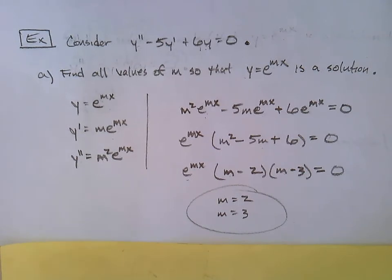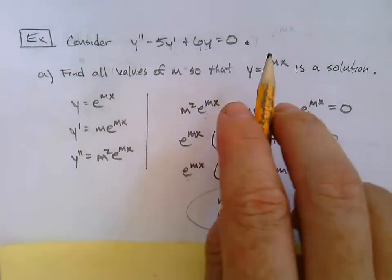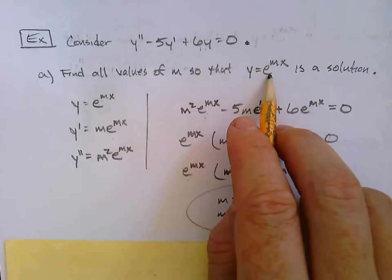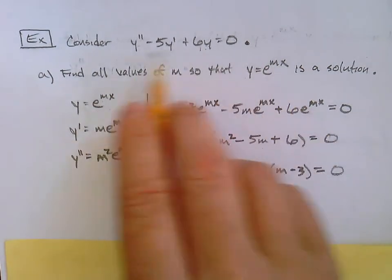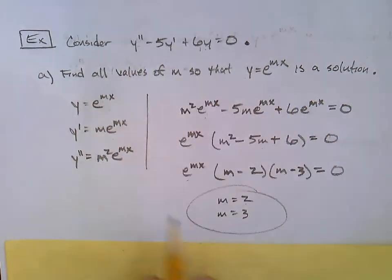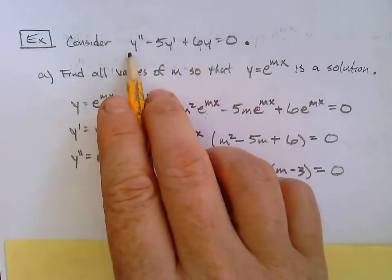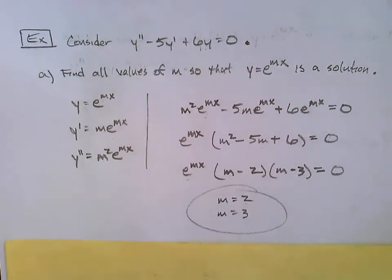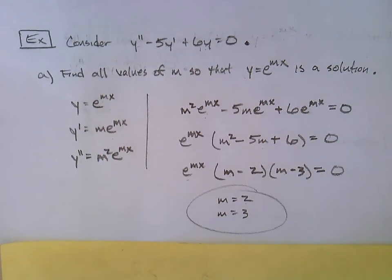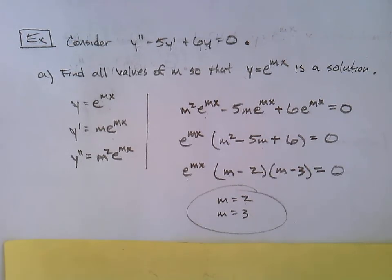If m is 2, then y equals e to the 2x is a solution. If m is 3, then y equals e to the 3x is a solution. We're not asked to verify those further — just to find the m values. That was part a.